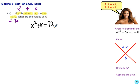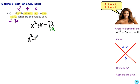Before solving, we check that the equation is in standard form: ax squared plus bx plus c equals zero. I call this the Beyoncé rule — to the left, to the left — everything needs to be on the left side of the equation. So we subtract 72 from both sides, giving us x squared plus x minus 72 equals zero.